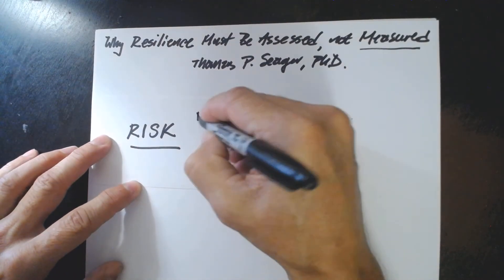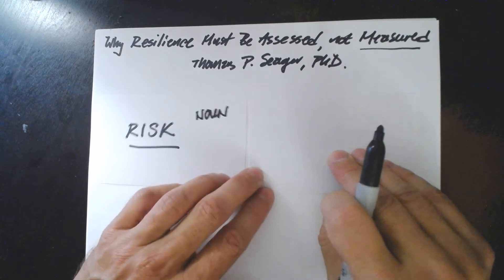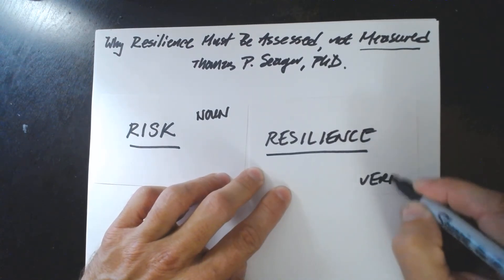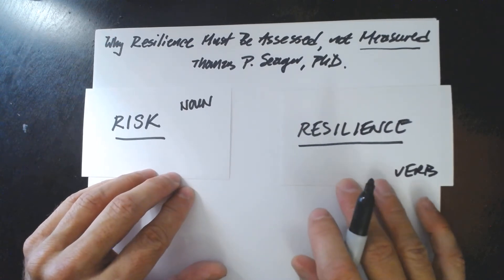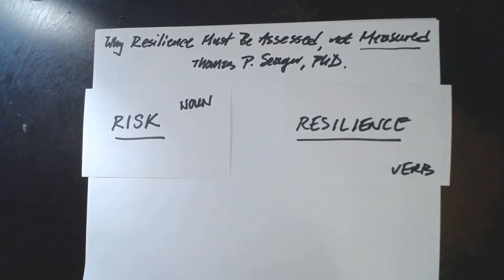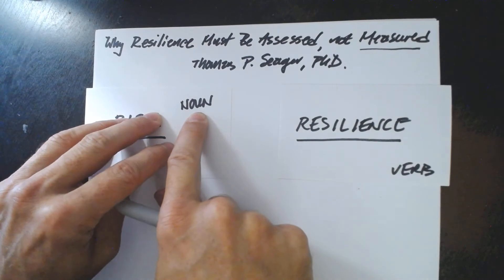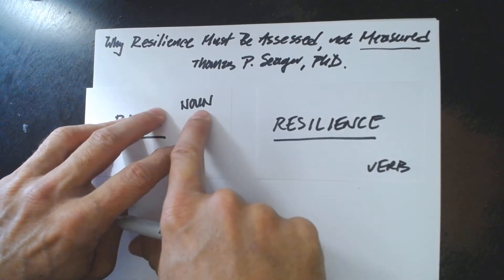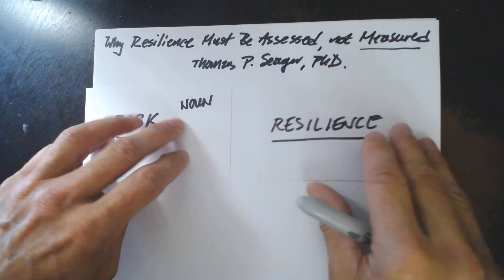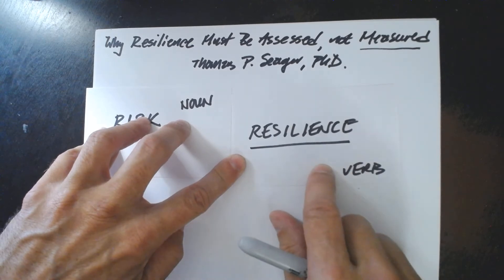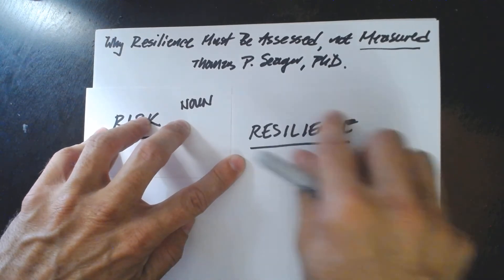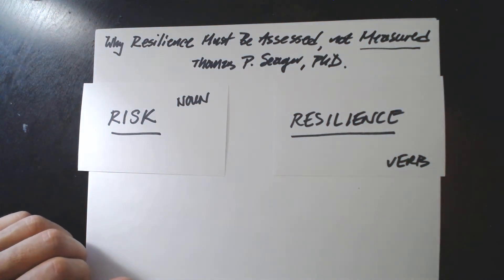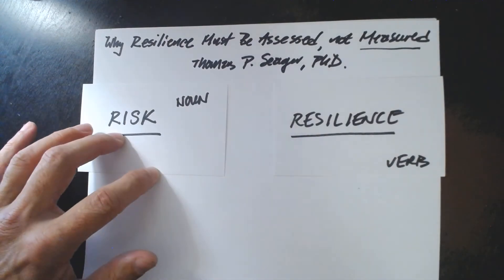In risk, the noun form dominates. And the weird thing about resilience is we think of resilience as a noun as well. But to think of resilience as something that you have rather than something as you do misses the essential aspect of resilience. It is not the emergency backup generator that makes your system resilient. It is your ability to activate the generator. It is not your centralized command system that makes your system resilient. It is your capacity to change the command system from centralized to decentralized, back and forth. And therefore, resilience is found in the adaptations, not in the objects. And this is why resilience must be assessed, not measured. Because measurement is for nouns and resilience is in action.